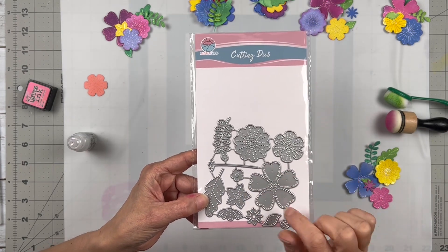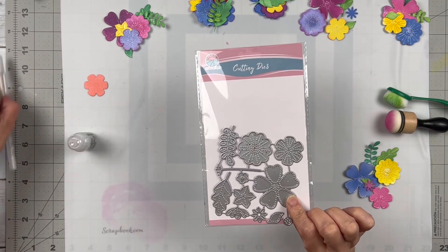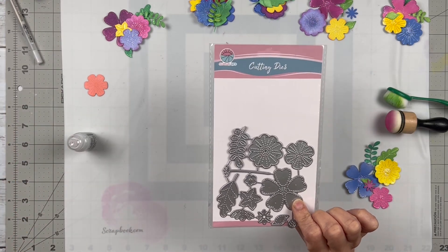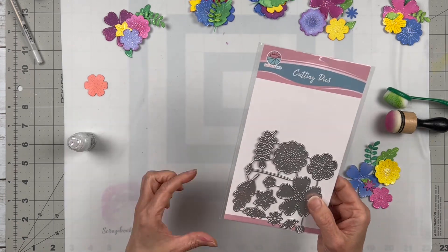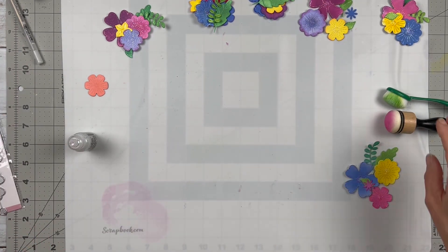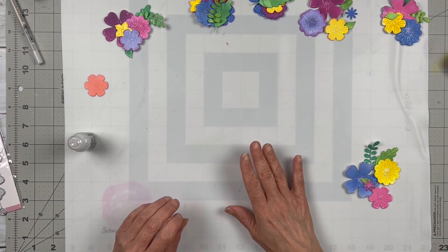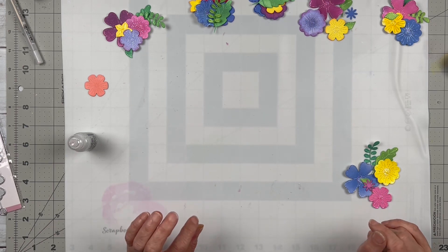I cut out lots and lots of these on 110 pound Neenah Solar cardstock. Because I am making embellishments, it's important that the embellishments are sturdy and not flimsy. I just wanted to show you what I'm doing and how I'm putting these little floral clusters together.